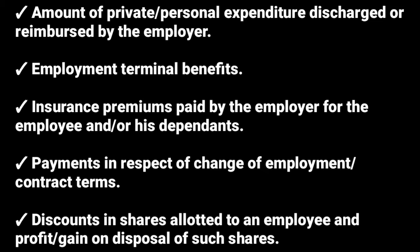Another composition is insurance premiums paid by the employer for the employee or his dependents. In case you have insurance and the employer pays your insurance, it is considered employment income. Or if you have kids and the employer pays insurance for your kids, your wife, and your dependents, it is also considered employment income — because if you were not doing that job, you wouldn't have gotten that benefit. So any insurance premiums paid by the employer for the employee or his dependents is considered employment income.